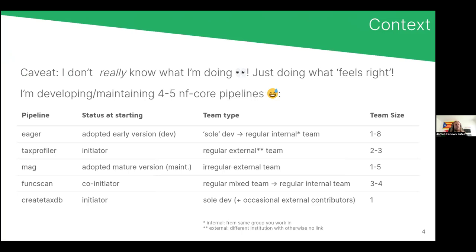As a bit of context, I am currently developing or maintaining — either in a main development role or maintainer role — eager, taxprofiler, mag, funcscan, and createtaxdb, all of which have different team sizes spanning from a maximum of about eight people down to an average of about four, typically from different institutions around the world at different time zones.